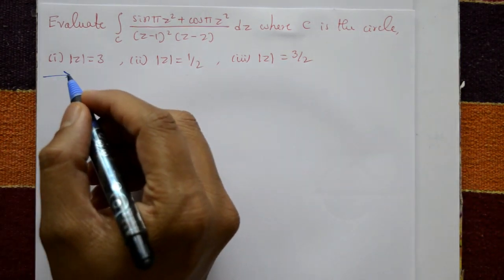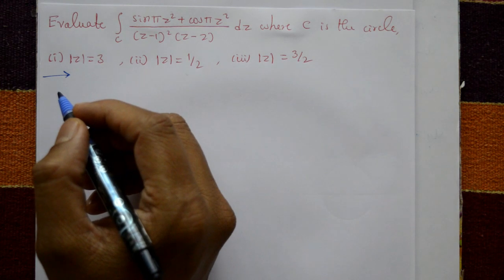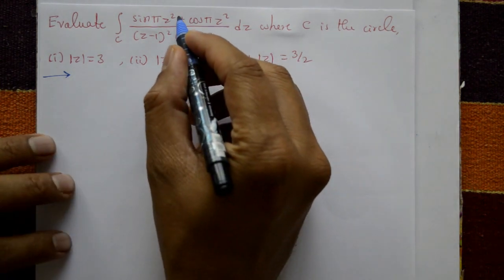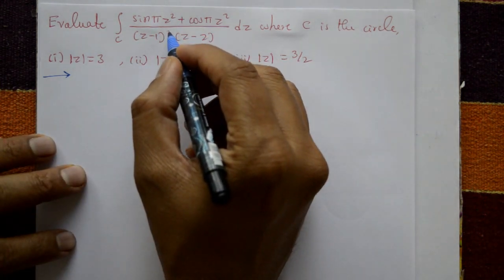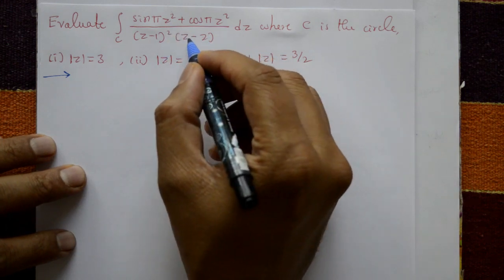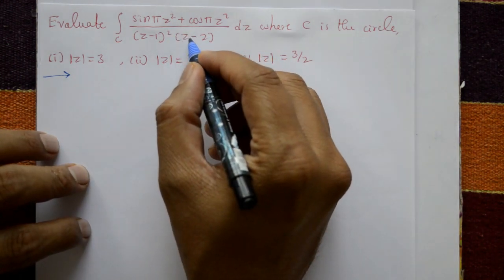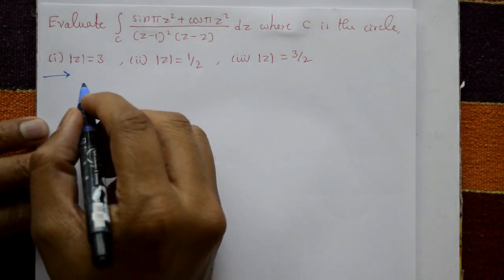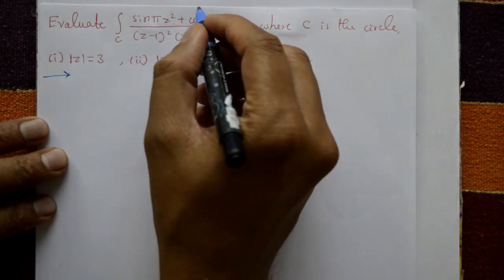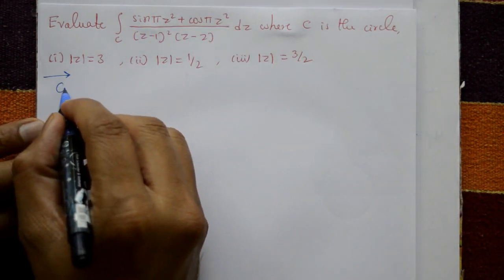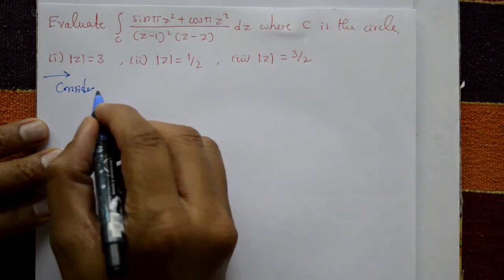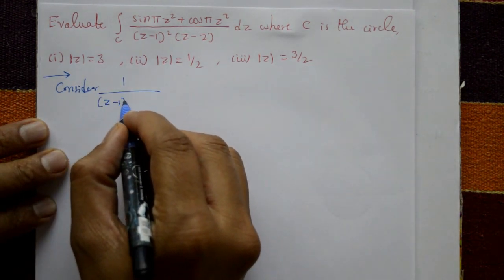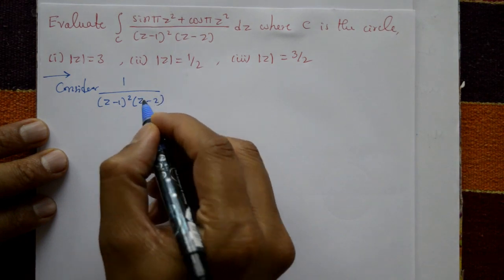Now for the solution, we consider 1 over (z-1)² times (z-2). We take this part and resolve it using partial fractions.